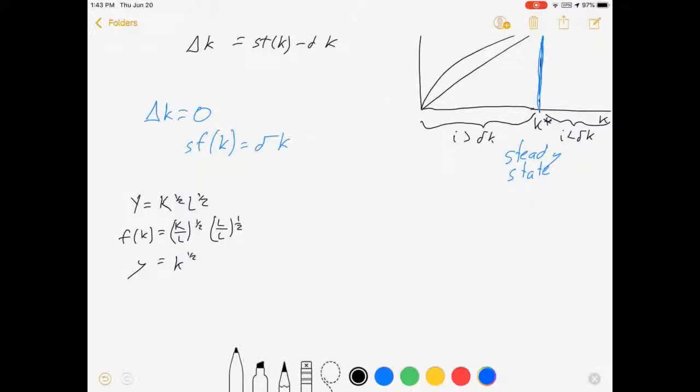Now, based on that we could solve for a steady state level of capital if we had information like s and delta. Let's say our people save 30% of their income and that capital depreciates 10% per year.